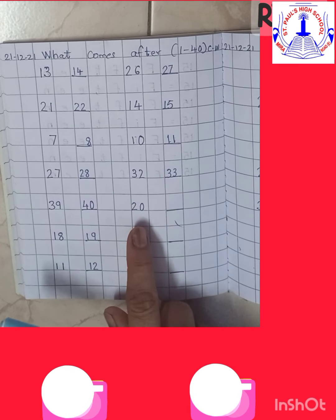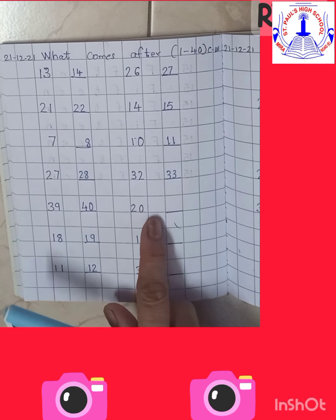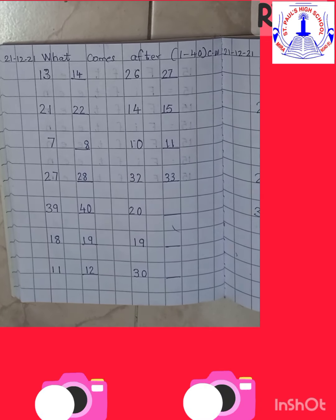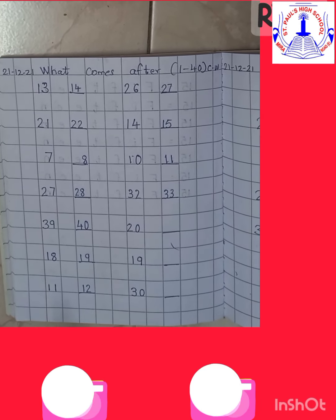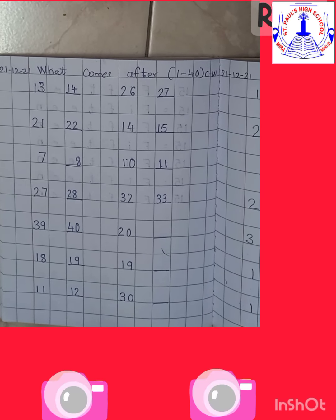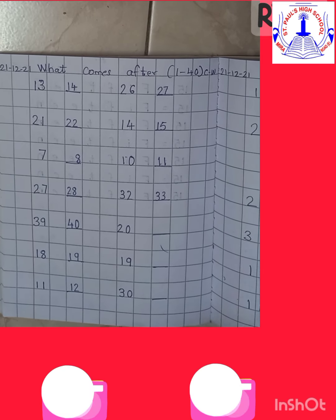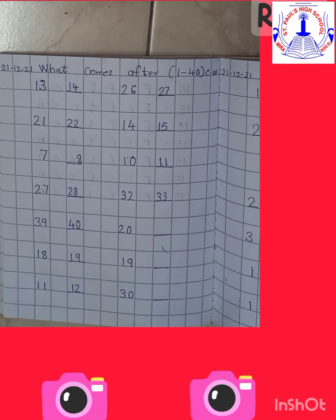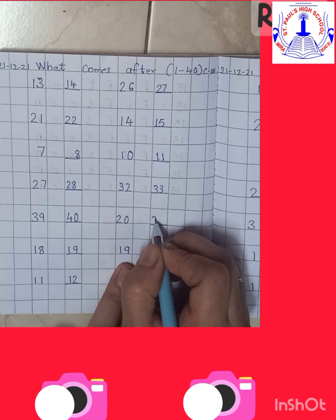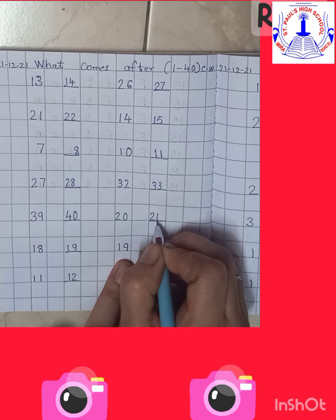Now what is the next number? 20. Let's start from number 11: 11, 12, 13, 14, 15, 16, 17, 18, 19, 20, 21. Yes — come on, write children, number 21.